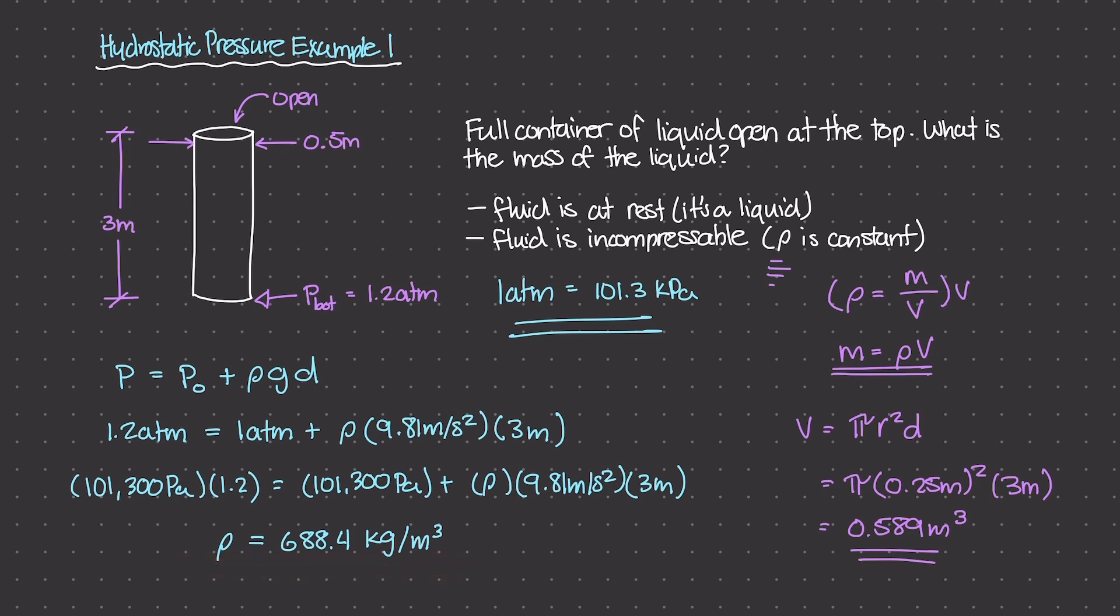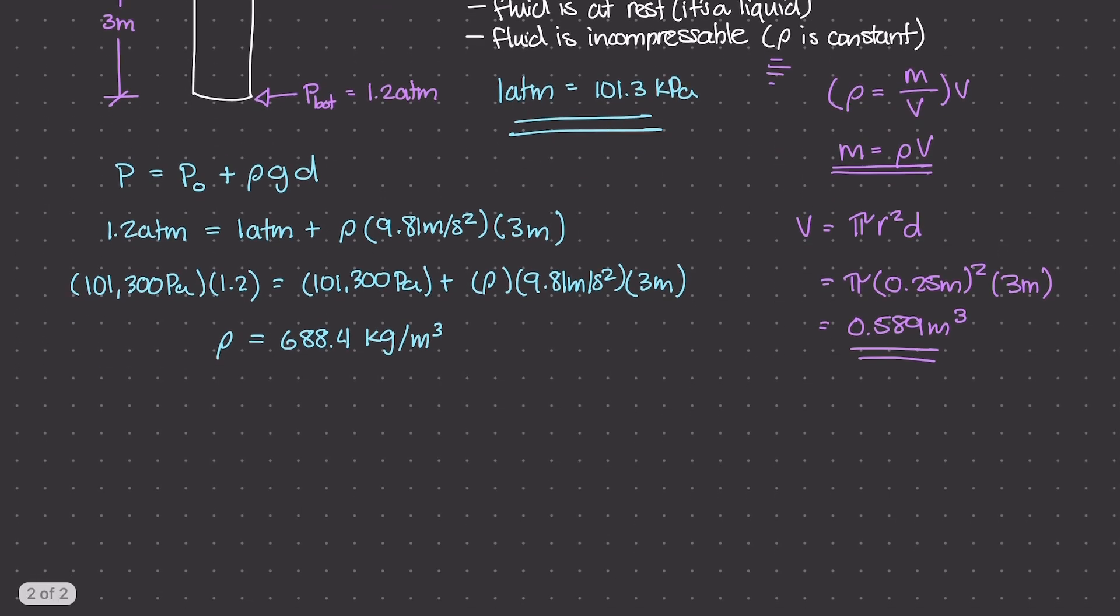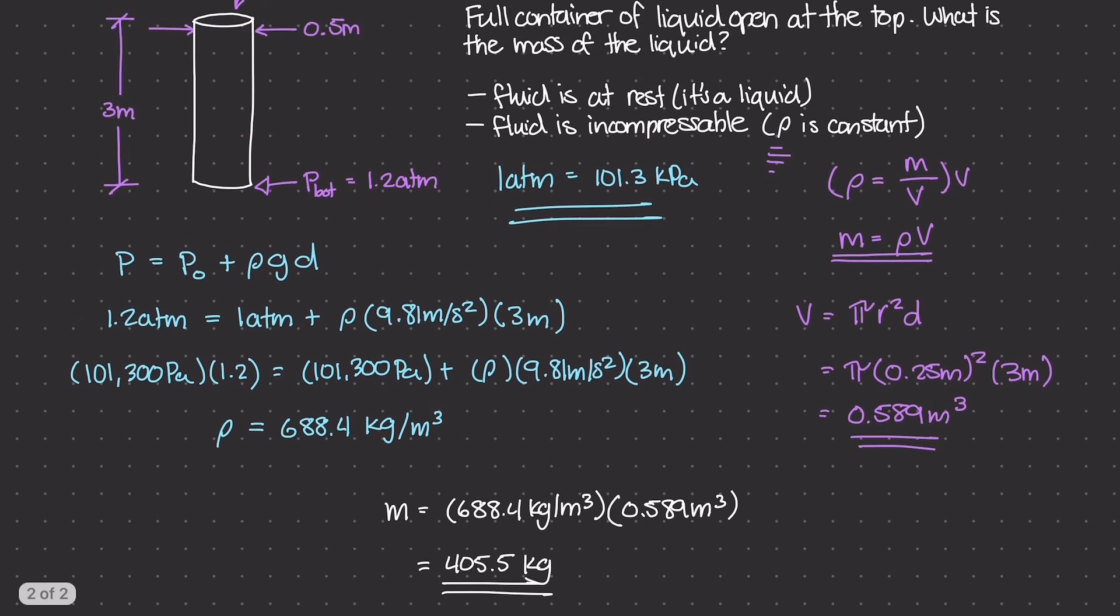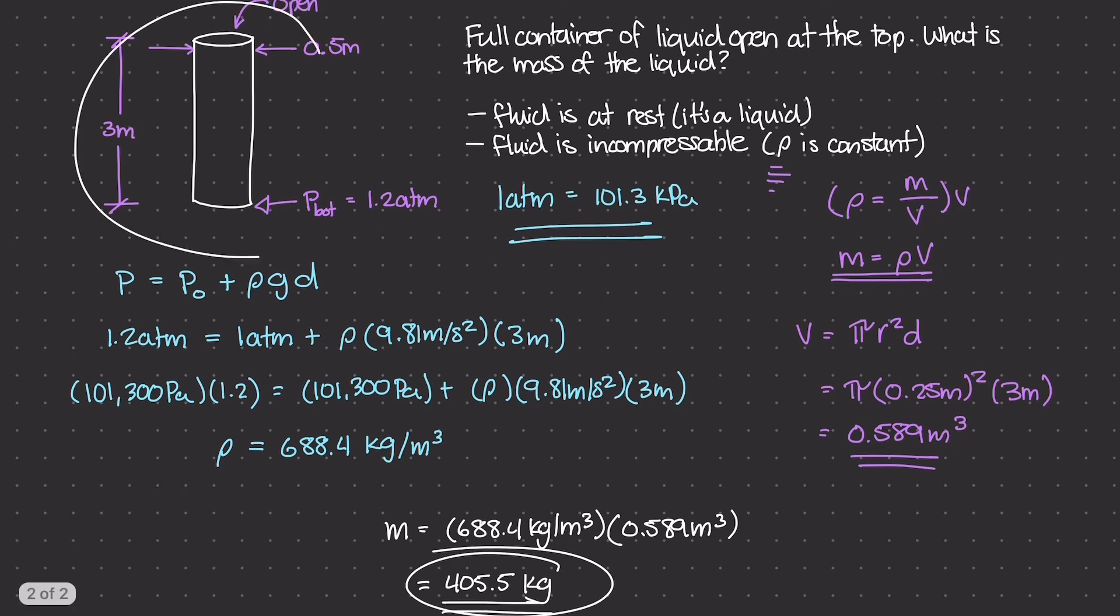Now we can use this equation to simply figure out what the mass is going to be. So what is that? So our mass is really ρ times V, and ρ was 688.4 kilograms per meter cubed times volume, which was 0.589 meters cubed. And this, if we just do the math there, is about 405.5 kilograms once the units cancel out. So there we go. We figured out what the mass was of this unknown liquid in this container, and we used the hydrostatic pressure equation as well as our definition of mass density to figure it out.